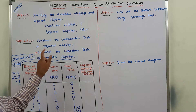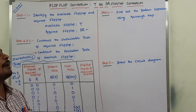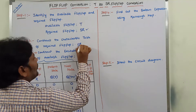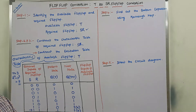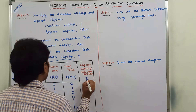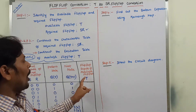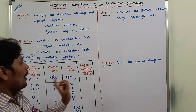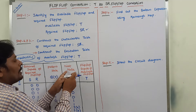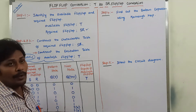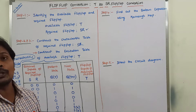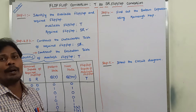Go to step 3: construct the excitation table of the available flip-flop. The available flip-flop is T flip-flop. For that, we have to find out the excitation table. In the available flip-flop, whatever input is present is called the flip-flop input. Here the flip-flop input is T. We have to find the T value using the second and third columns — Q(T) and Q(T+1) — as input columns.